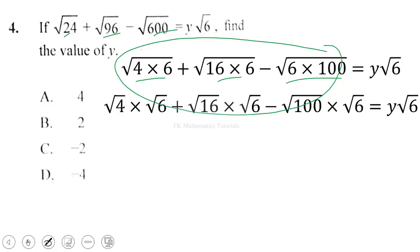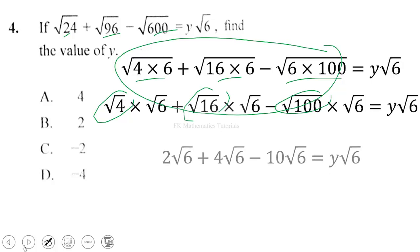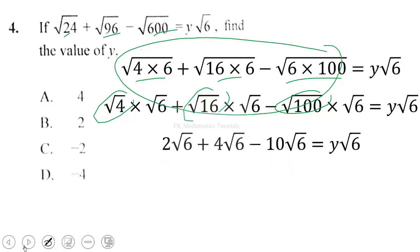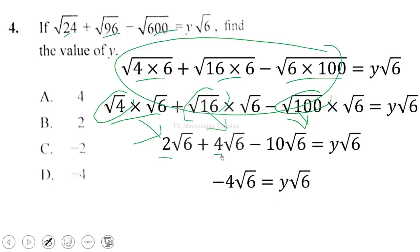Using the rule √(AB) = √A × √B, we spread the root sign: √4·√6 + √16·√6 − √100·√6. We know √4 = 2, √16 = 4, and √100 = 10. So this gives us 2√6 + 4√6 − 10√6. Simplifying: 2 + 4 = 6, then 6 − 10 = −4. So the left-hand side equals −4√6. Comparing with y√6, we get y = −4.